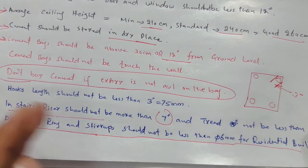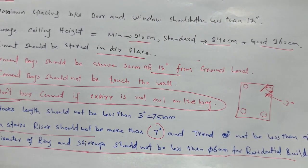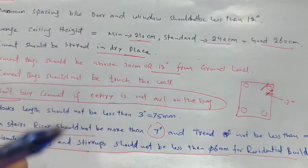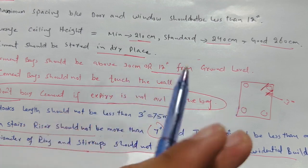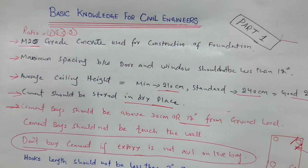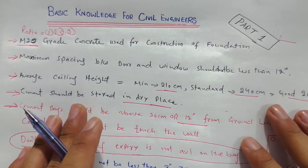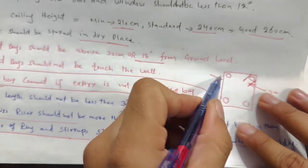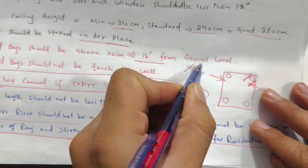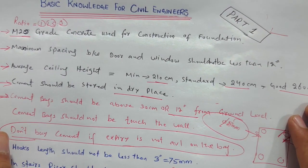The diameter of the ring or stirrup should not be less than six millimeters for a normal residential building. Many people use less than six millimeters, but do not use less than six millimeters. I recommend using eight millimeters for normal residential and commercial buildings, though for commercial buildings it depends on the structural load and structural drawings of beams, columns, slabs, etc. The stirrup diameter should not be less than six millimeters, but eight millimeters is the proper recommended diameter.